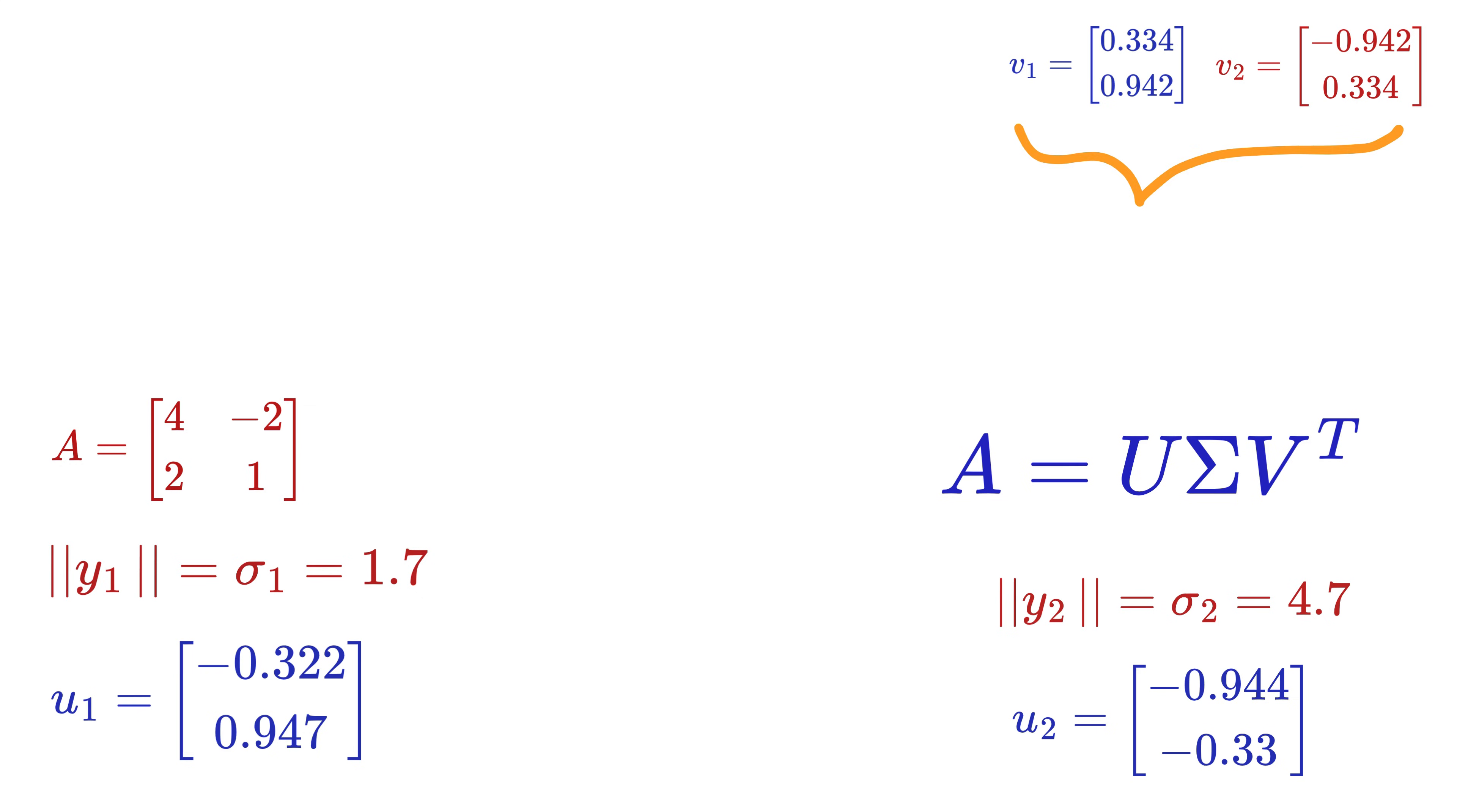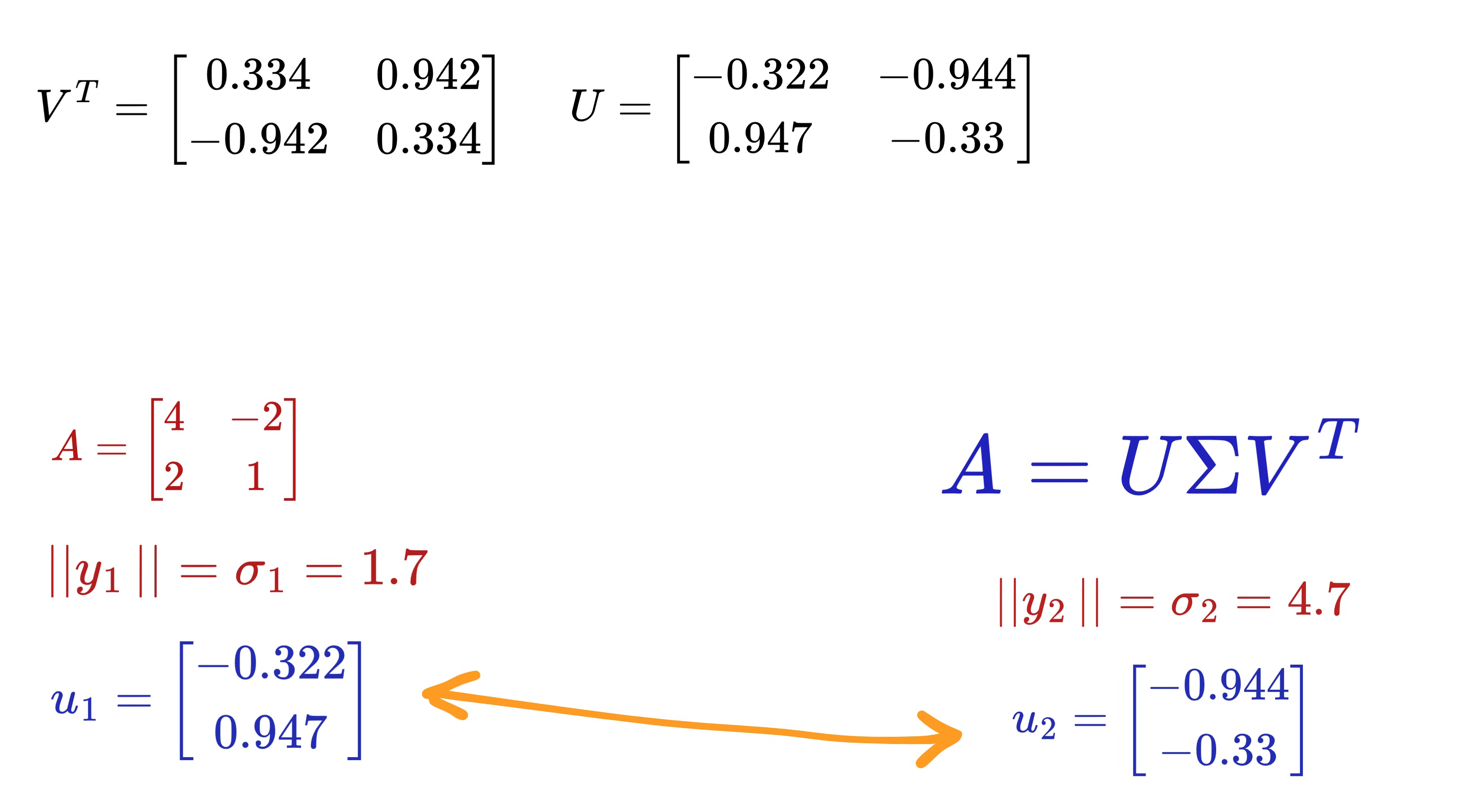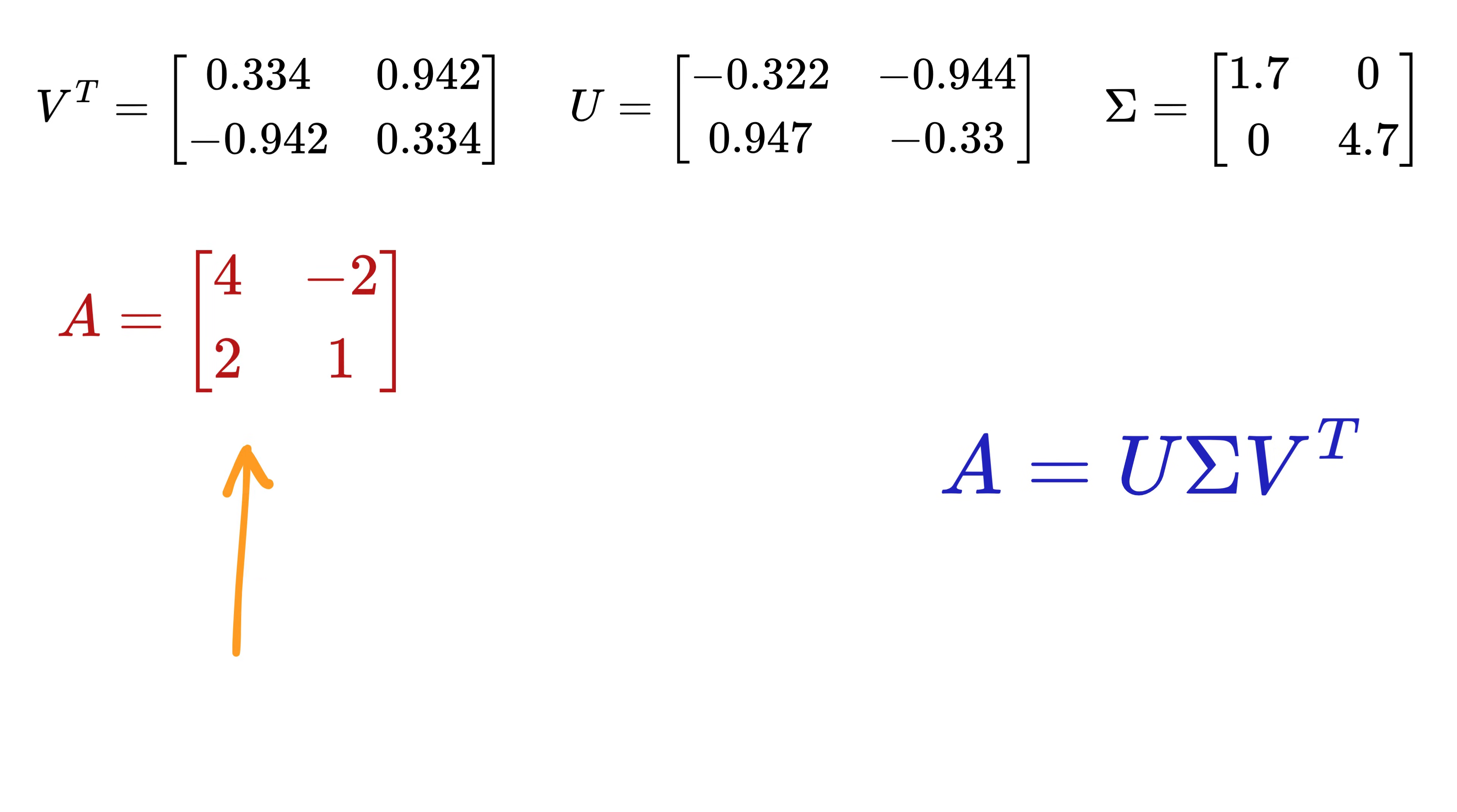Now, using these two vectors, V will be this matrix, and thus V transpose will be this. Then using these two vectors, U matrix will be this. And then using sigma 1 and sigma 2 values, sigma matrix will be this. So, this A matrix can also be rewritten like this.